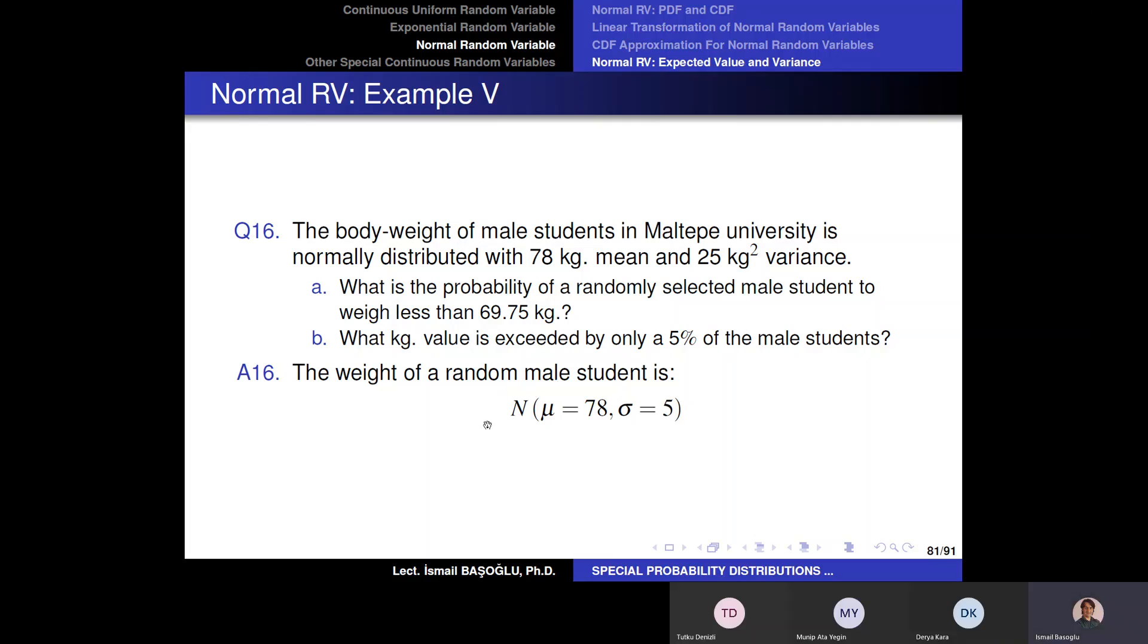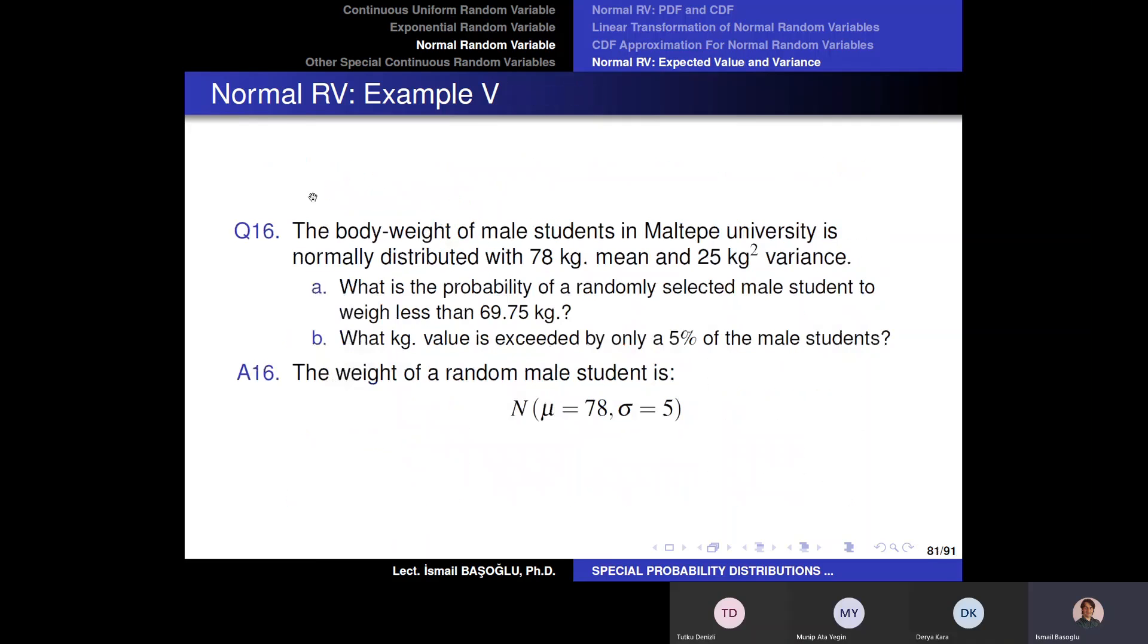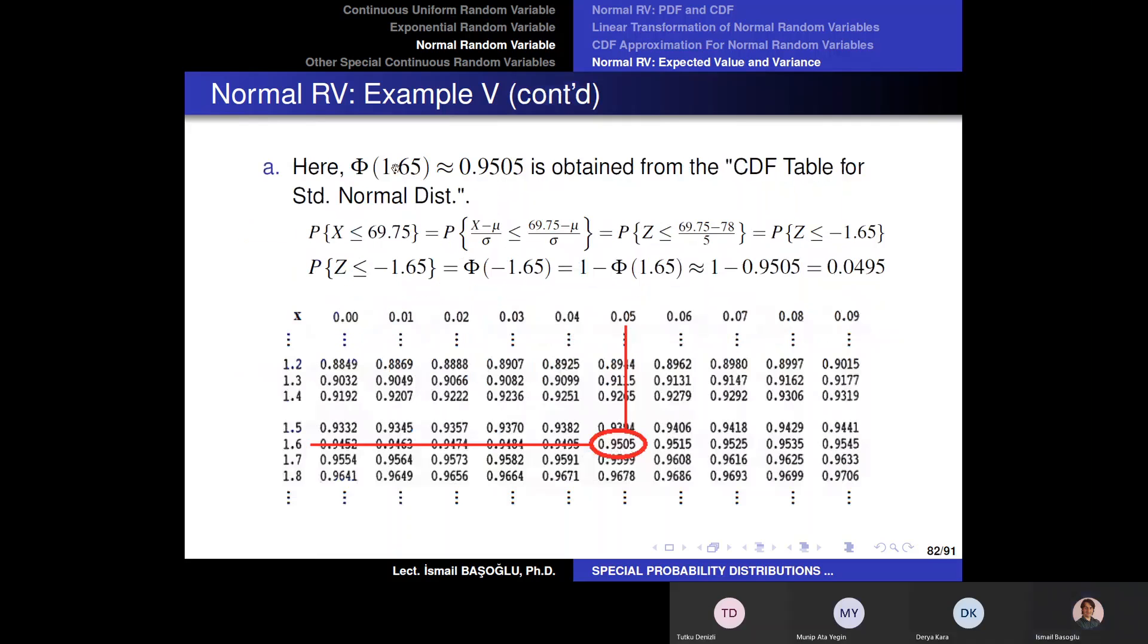So we randomly select a student here which has a weight which is normally distributed around 78 kilograms mean, the location parameter and the sigma value is 5. What is the probability of a randomly selected male student to weigh less than 69.75 kilograms? Now after introducing my random variable here, the question is asking this. So what is the probability of a randomly selected student's weight to be less than or equal to 69.75 kilograms?